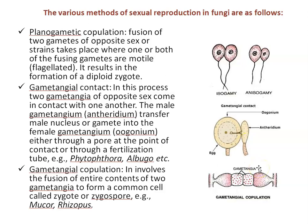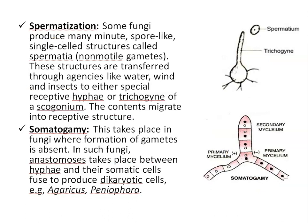The third method is gametangial copulation. It involves the fusion of the entire contents of two gametangia to form a common cell called a zygote or zygospore, commonly found in Mucor and Rhizopus. The next method is spermatization. Some fungi produce minute spore-like single-celled structures called spermatia — non-motile structures. These are transferred through agencies like water, wind, or insects to a special receptive hypha called trichogyne. The contents then migrate into the receptive structure, and ultimately fusion of two nuclei occurs with formation of a zygote.